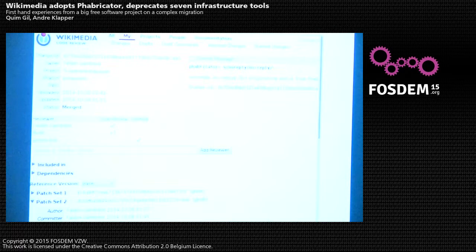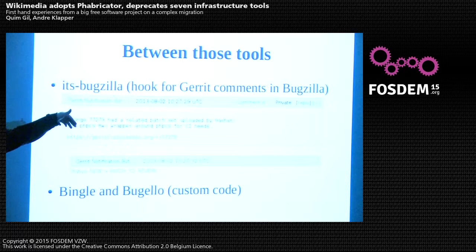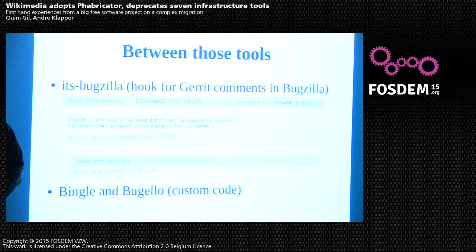For code review we still have a Gerrit instance. We had all these tools, and between them we had some interactions — for example, a hook to create comments from Gerrit in Bugzilla tickets. Some teams used Mingle and Trello for project management, so we also had custom scripts called 'Mingle' and 'Bugallo' to sync between Bugzilla and Mingle, and Bugzilla and Trello.